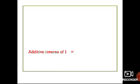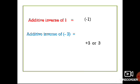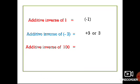Now let's find some examples. Additive inverse of 1: to find the additive inverse, we write the number itself and then change the sign. The sign of 1 is positive, so we change it to negative. The additive inverse of 1 is minus 1 — same number with the opposite sign. Next, additive inverse of minus 3 is plus 3, which we simply write as 3. There is no need of a plus sign before a positive number. Then, additive inverse of 100 is minus 100.